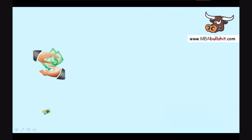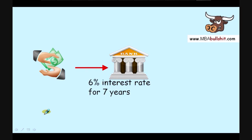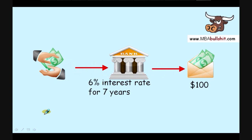I'd like to start with a story. Let's say that your grandmother gave you money when you were younger — a certain amount of money — and you don't remember how much that money was. All you remember is that you put it in a bank for seven years, and in the bank it earned 6% interest. And after those seven years, you have $100.